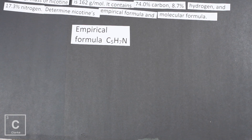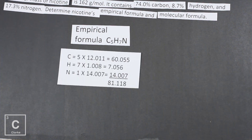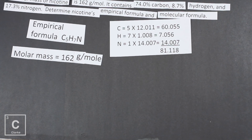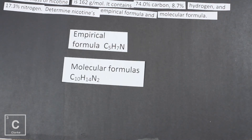Five carbons, seven hydrogens, one nitrogen. Now we also need the molecular formula. The molecular formula multiplier is molecular mass divided by empirical mass. Adding up five carbons, seven hydrogens, and one nitrogen gives an empirical molar mass of 81.118. The molecular molar mass of nicotine is 162 grams per mole. Dividing 162 by 81.118 gives close enough to round to 2. So our empirical formula is C5H7N1, and our molecular formula is C10H14N2.